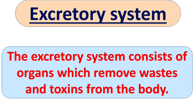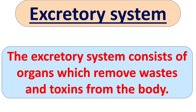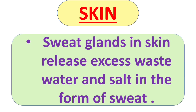Next is the excretory system. The excretory system consists of organs which remove waste aids and toxins from the body. First, we will talk about skin. Skin also helps us in excretion. Sweat glands in the skin release excess waste, water, and salt in the form of sweat.